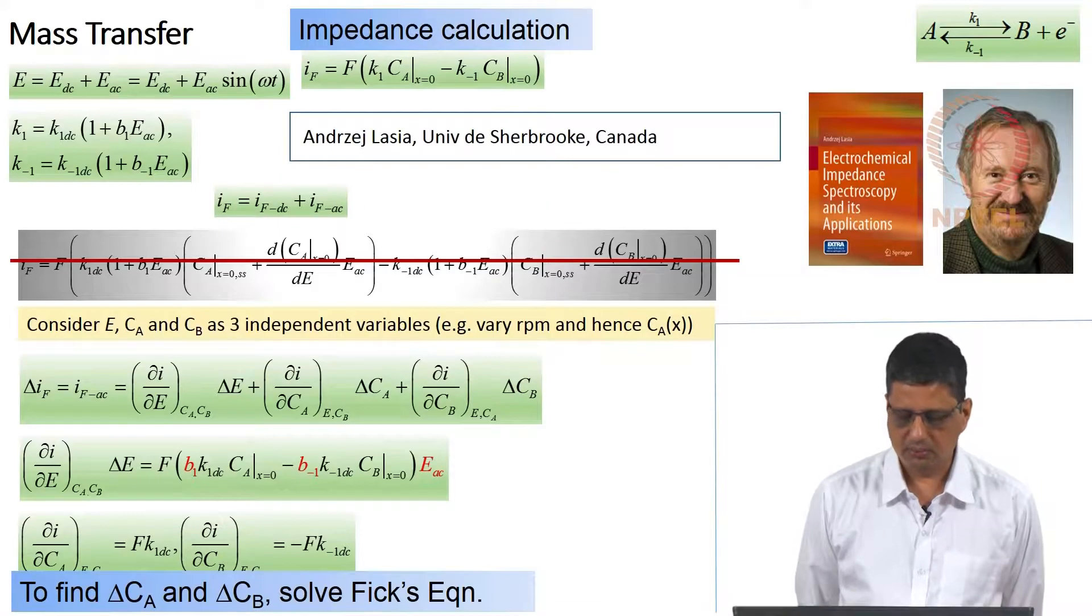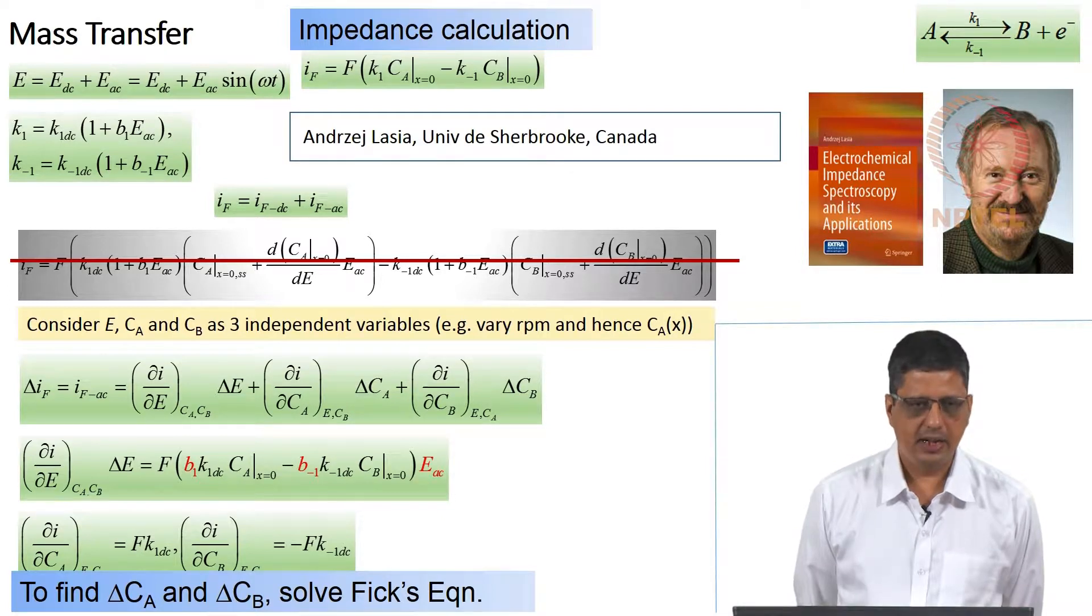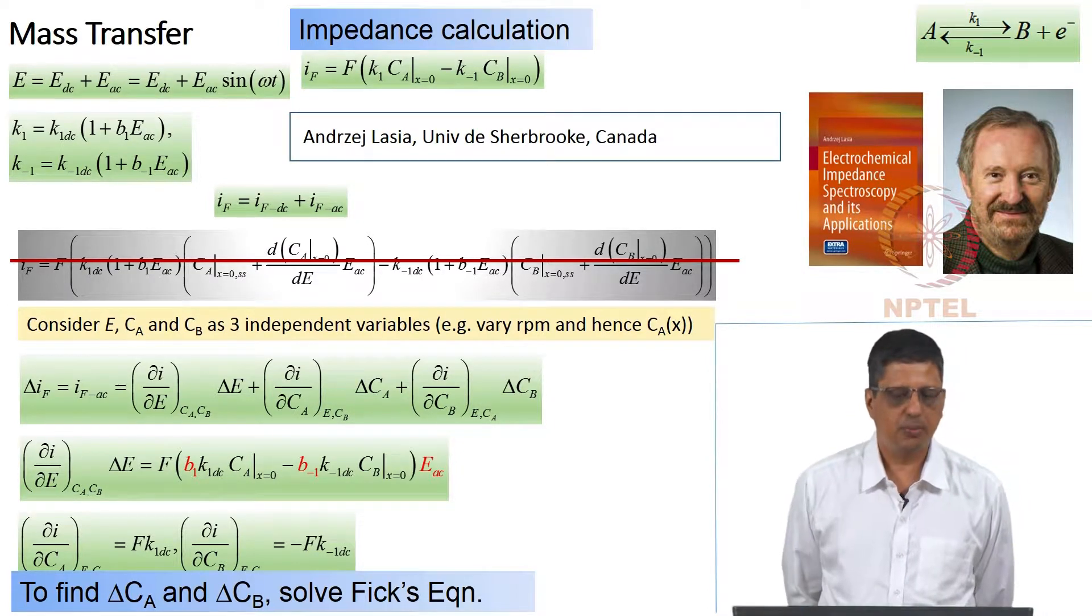Then we started working on calculation of impedance. We applied DC potential and on top of DC potential, we apply an AC potential. That is a general case. Rate constants, of course, we know how to approximate them.